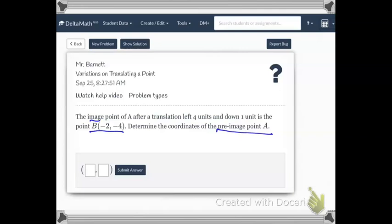Okay. So what that means is we have some X and some Y. And we added in the vector, which was left 4 units and down 1 unit. So down 1. And that gave us negative 2, negative 4. So what we're going to do is we're going to do this backwards.